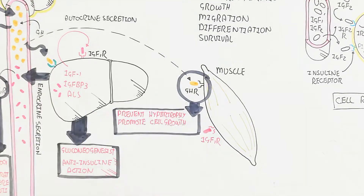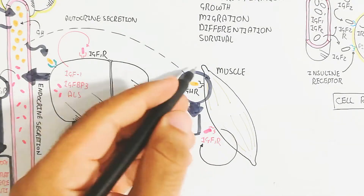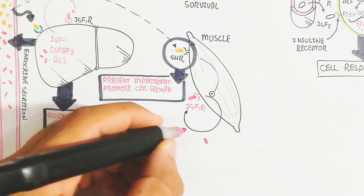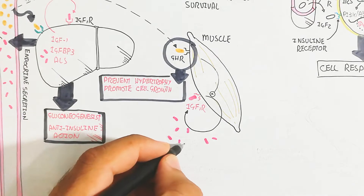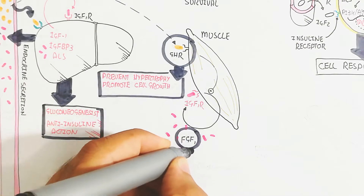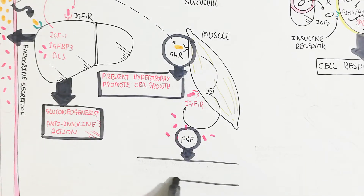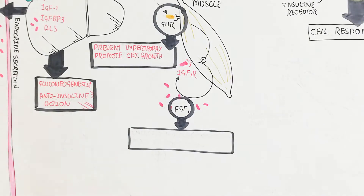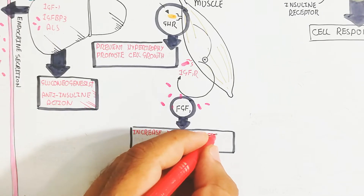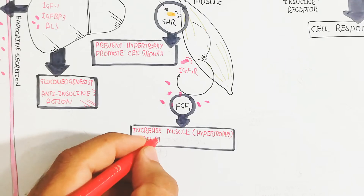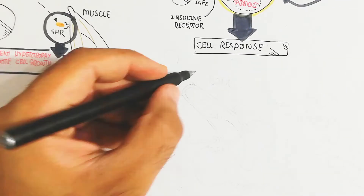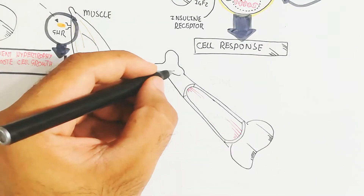In muscle, binding of growth hormone to the growth hormone receptor triggers the IGF-1 receptor. IGF-1 binding leads to muscle cell growth and prevents hypertrophy, while promoting cell growth in muscle. FGF1 promotes increased muscle size, hypertrophy, and mass restoration — in contrast to growth hormone, which prevents hypertrophy and promotes cell growth.